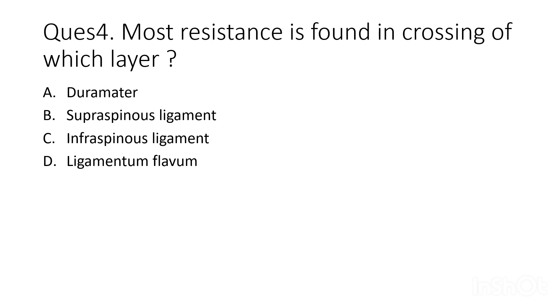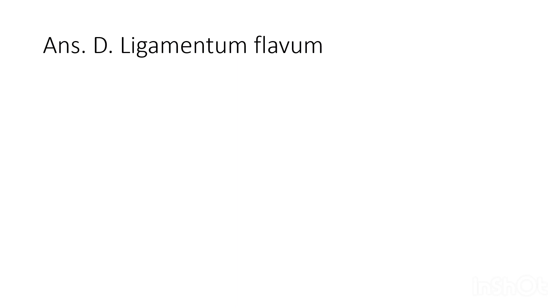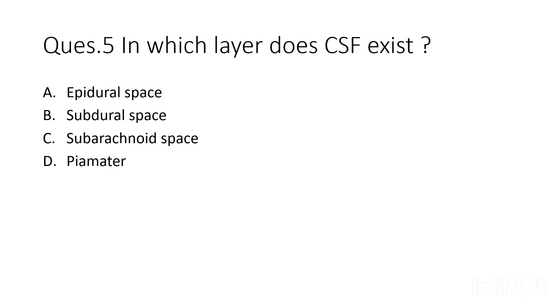Fourth question: most resistance is found in crossing which layer? Options are dura mater, supraspinous ligament, infraspinous ligament, and ligamentum flavum. The correct answer is ligamentum flavum — when piercing the ligamentum flavum we encounter the most resistance.